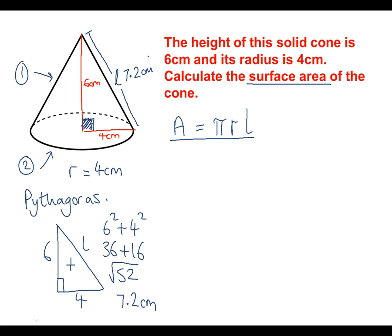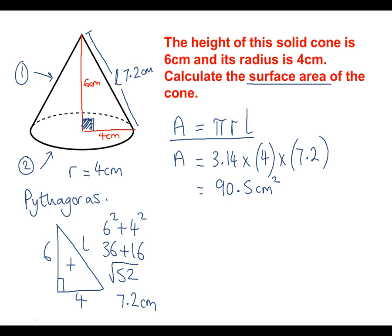Now we've calculated the length, we can work out the surface area of part one — the curved part of the cone. The surface area of the curved part is π × 3.14 × radius 4 centimetres × length 7.2 centimetres. Type this into a calculator and we get 90.5 centimetres squared. That's the area of the curved part of the cone.